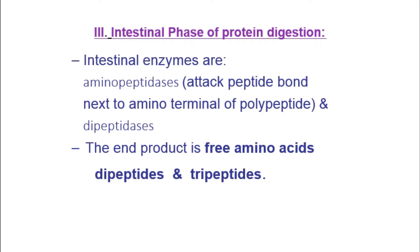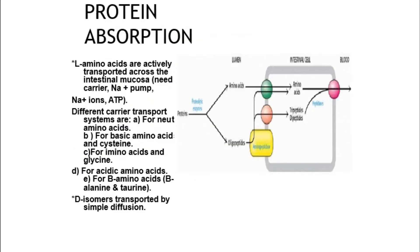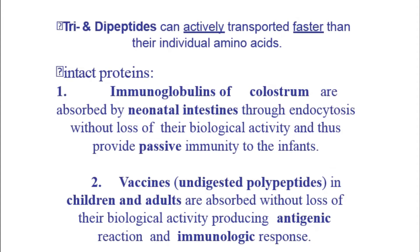Once digestion is complete, the next phase is protein absorption. Most amino acids are in the form of L-amino acids. These are absorbed via the intestinal wall or intestinal mucosa by active transport, with the help of carrier proteins and the sodium-potassium pump. Different types of amino acids use different carrier transport mechanisms. A small amount of D-isomer amino acids are transported via simple diffusion. Notably, tri- and dipeptides can be actively transported faster than individual amino acids.